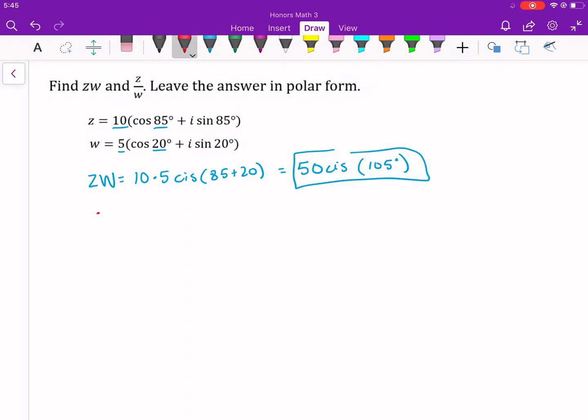You just use them once. So one of the 85, one of the 20. And so you get 50 cis 105 degrees. Let's do the other one, dividing. So we do 10 divided by 5, cis, 85 minus 20 this time. So you subtract the angles. So you get 2 cis of 65 degrees.